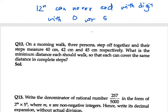What is the minimum distance each should walk so that each covers the same distance in complete steps? As it says minimum distance, we need to find LCM of the numbers. In this case we need to find LCM of the step lengths.